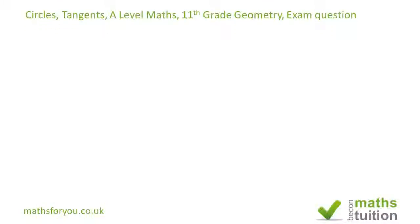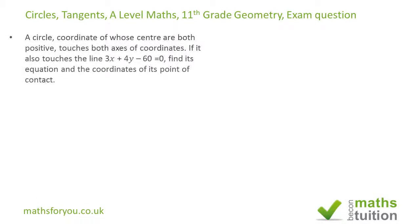Hello and welcome to this exercise on circles and tangents. It is an A-level type question, also relevant to IGCSE Additional Mathematics. The question states: a circle whose coordinates of the centre are both positive — meaning the circle is in the first quadrant — touches both axes of coordinates, and also touches the line 3x + 4y − 60 = 0. Find its equation.